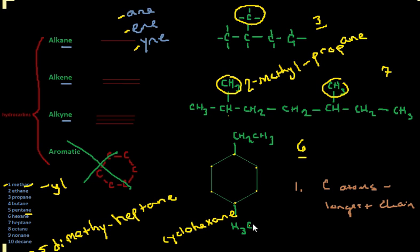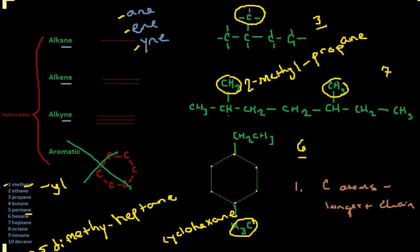But now we have substituents off of that. Well, one of them is a methyl group, but we have substituents — we have one there and we have one up here. The way you do this is if you have two groups like that, you're going to do it alphabetically. So we count: this would be one, and then we count two, three, four. If we counted the other way — one, two, three, four — we get the same answer.